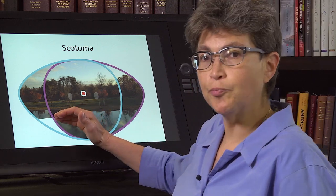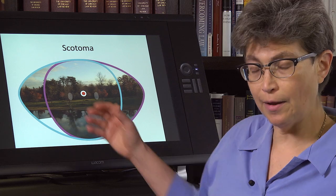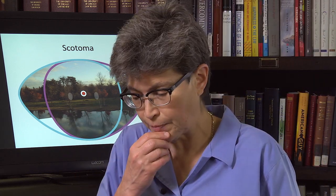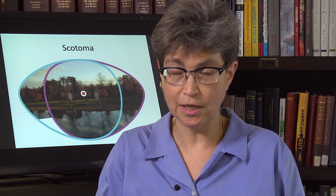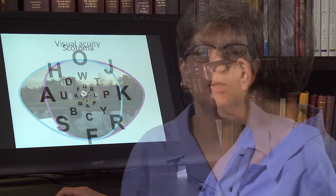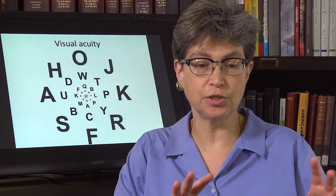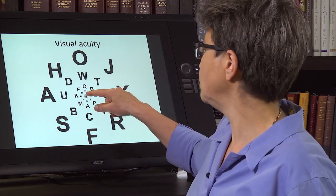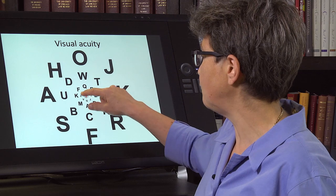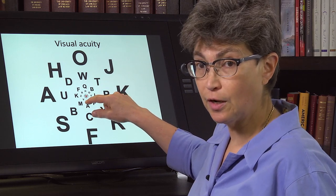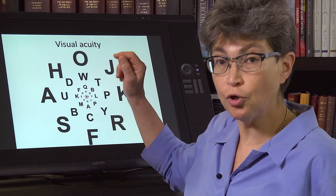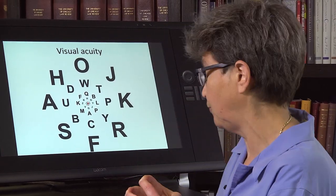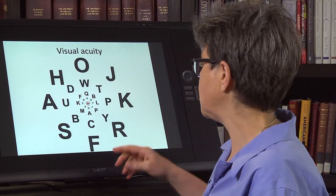These scotomas are pretty difficult to detect, and that's intentionally so — it's a real tribute to the efficacy of the visual system. You can learn how to detect them, and you will learn how to detect them. In contrast to scotomas out in the periphery, if you lose vision in the center of the visual field, you'll notice it a lot faster and with a lot smaller bit of damage.